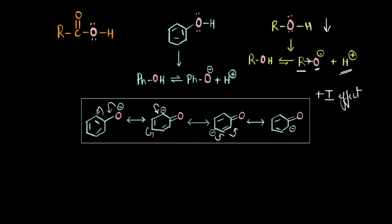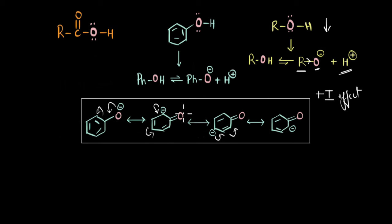Look at the structure. You can see that the negative charge is delocalizing through the entire molecule. As a result, the charge is spread and diffused throughout the entire molecule and not concentrated or localized onto a single atom. This delocalization of negative charge makes the phenoxide ion much more stable and favors the ionization of phenol a lot more than the ionization of alcohol.